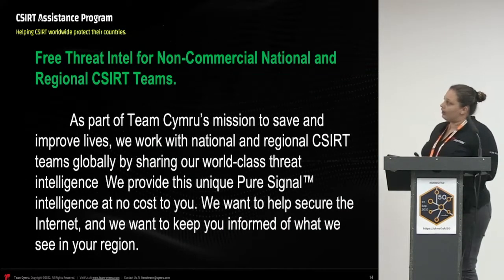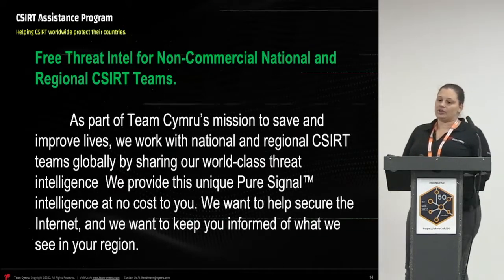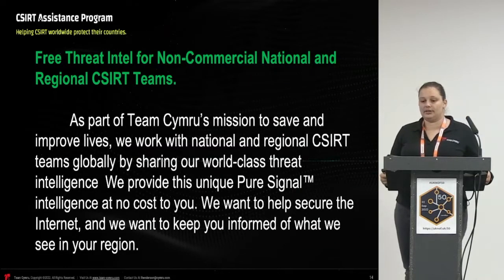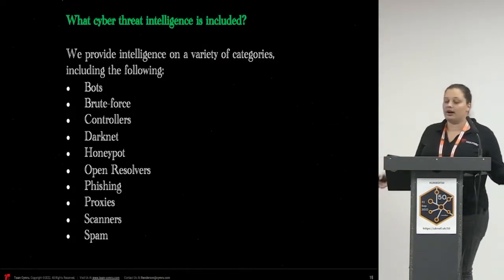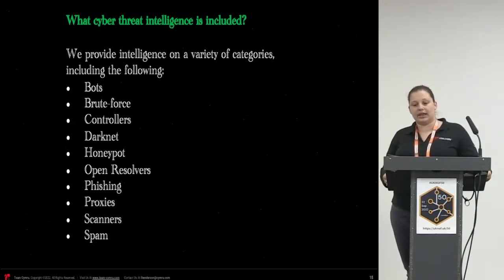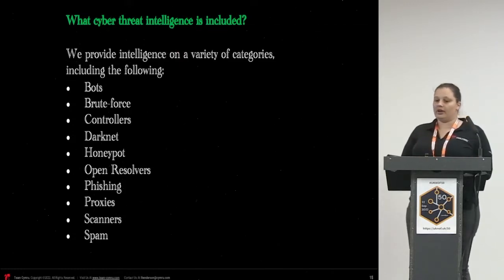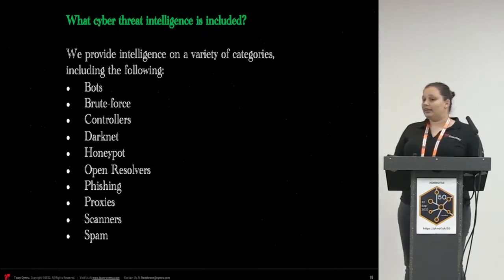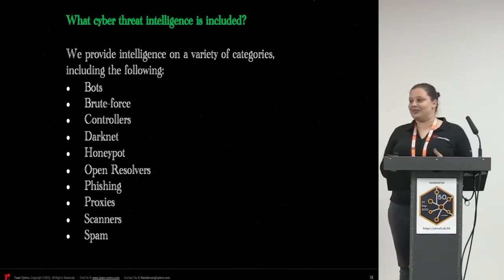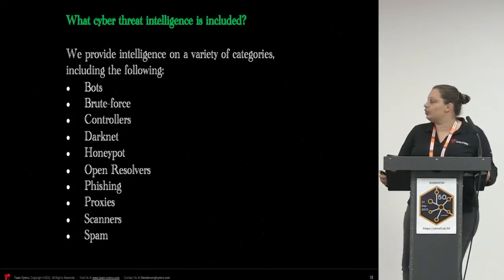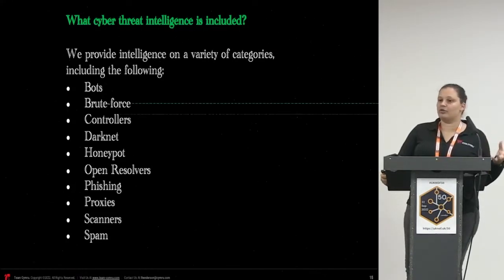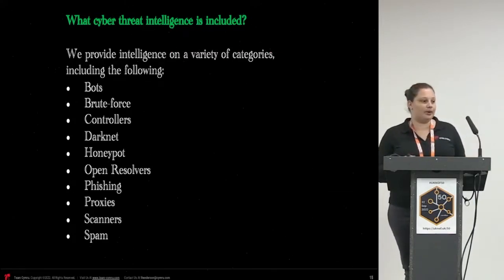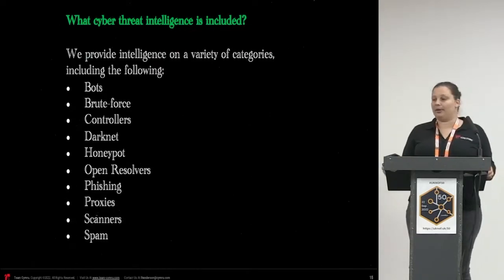We also have the CCERT Assistance Program, which is a free threat intelligence program that provides cyber threat intelligence to national and regional CCERT teams. It provides information like bots, controllers, darknets, honeypots, phishing, spam, and scanners. Our goal is to help secure the internet and keep people informed of what we see in their region. And the last service — which I forgot to include in the PowerPoint, and I'm very sorry — is our DNB Dragon News Byte, a mailing list I take care of. It includes a daily email to an exclusive list with news from our world: articles from newspapers, well-known publications, or even our own website.